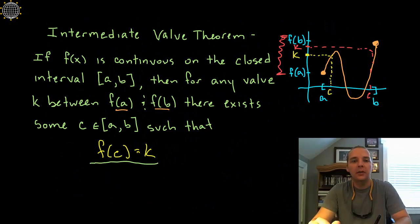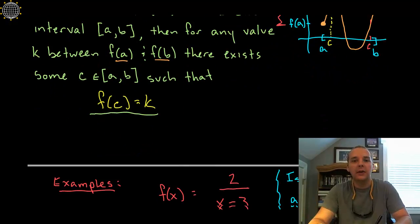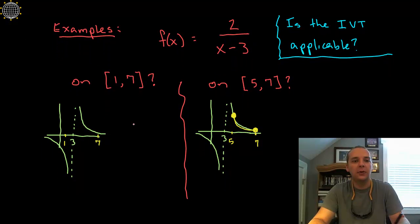But what they're likely to ask us is, is the intermediate value theorem applicable on a given function on a given interval. So let's try this for two separate intervals here. So if we define f on the interval from 1 to 7, that's my a to b, is the intermediate value theorem applicable on this closed interval? And the answer is no.